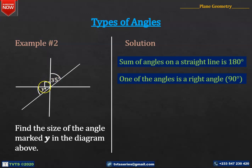That is, Y plus 35 degrees is equal to 90 degrees. Grouping like terms, we have Y is equal to 90 degrees minus 35 degrees. 90 degrees minus 35 degrees is 55 degrees. Hence, Y is equal to 55 degrees.